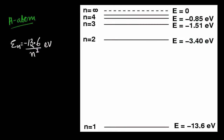Hello everyone. In this lecture we will be working further on Bohr's model and looking at the hydrogen atom. Just to recap, the energy in the nth energy level is minus 13.6 Z squared by n squared. For the hydrogen atom, Z equals 1, so energy is minus 13.6 by n squared.